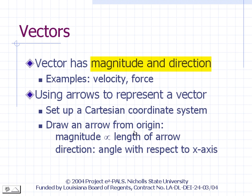A vector is a quantity that has magnitude and direction. Examples of vectors are velocity and force. To specify the velocity of an object, we need to specify not just how fast it's moving — that is, its speed — but also where it's headed. Graphically, we can represent a vector quantity by drawing an arrow. For the arrow to mean anything, it needs to be drawn in reference to a coordinate system.